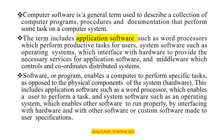Computer software is a general term used to describe a collection of computer programs, procedures, and documentation that perform some task on a computer system. So what does computer software include?